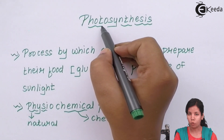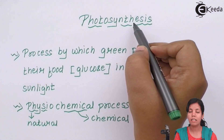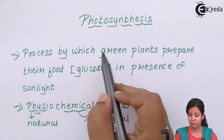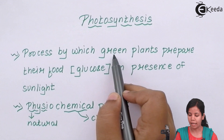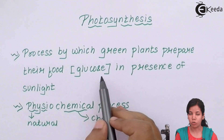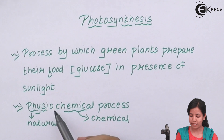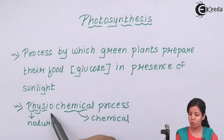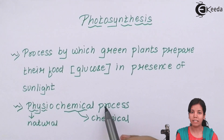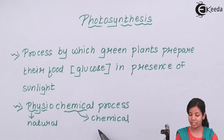To recap: 'photo' means sunlight and 'synthesis' means preparation of food. Photosynthesis is the process by which green plants prepare their food — glucose — in the presence of sunlight. It is a physiochemical process, meaning it uses sunlight as well as chemicals.